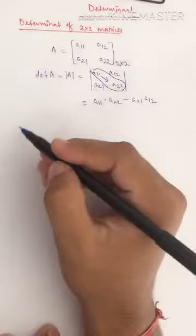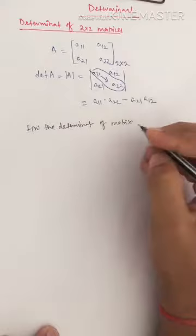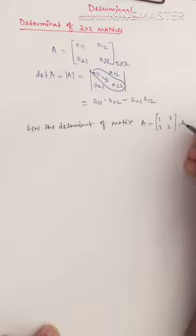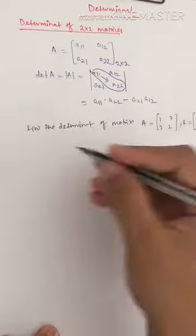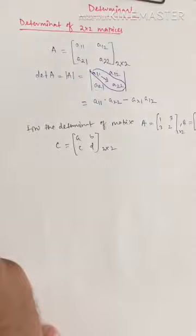So let's take examples for better understanding. Find the determinant of matrix A = [1, 3; 3, 2], another example B = [0, 1; 2, 3], and a general example C = [a, b; c, d]. These are all two cross two square matrices. Let's solve these examples.